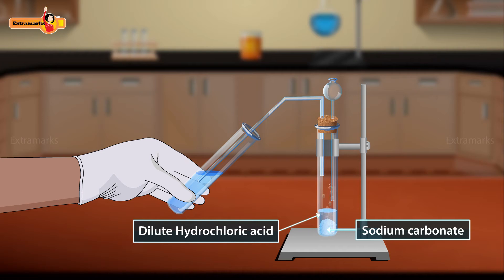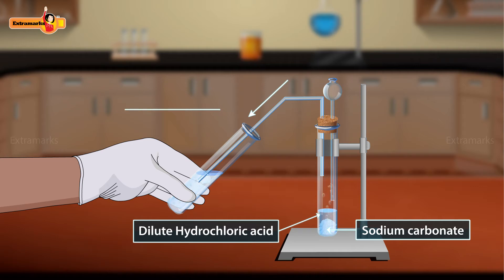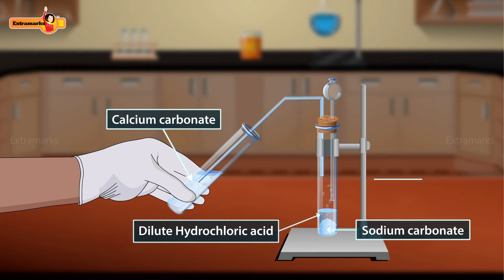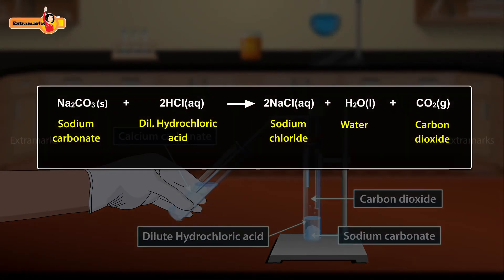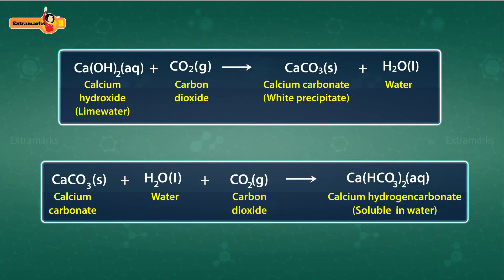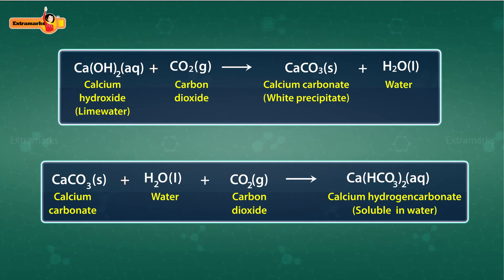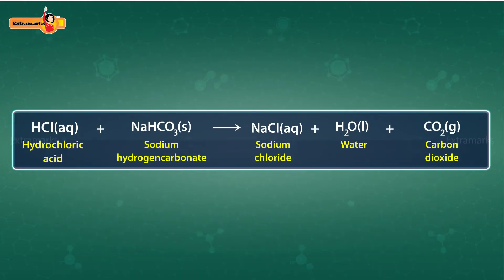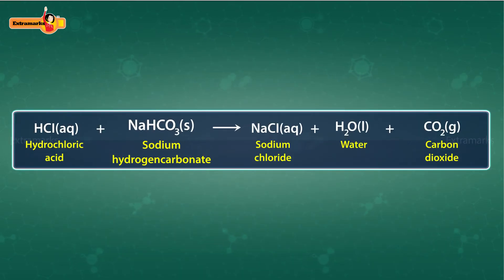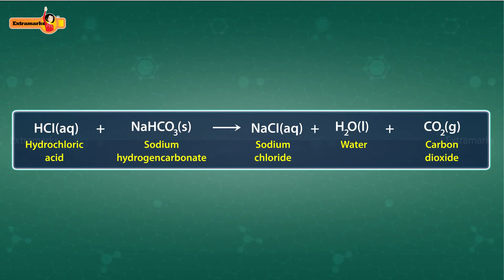Observe the bubbles of a colorless and odorless gas. When these bubbles of gas are passed into a test tube containing lime water, it turns milky due to the formation of calcium carbonate, indicating that the gas evolved is carbon dioxide. When excess carbon dioxide is passed into lime water, calcium hydrogen carbonate is formed, which is soluble in water, and therefore the milkiness disappears. When hydrochloric acid reacts with sodium hydrogen carbonate, the evolution of the same gas, carbon dioxide, is observed.